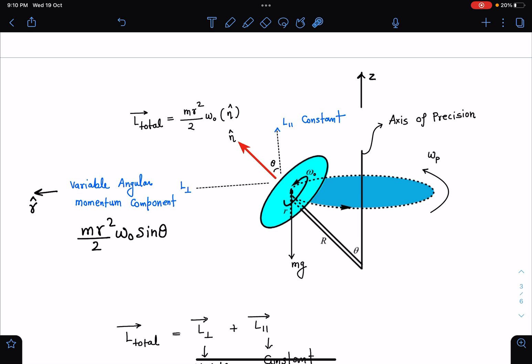About this point, this angular momentum will have two components. One is parallel to this precession axis, which is L parallel, which is constant. There is another angular momentum component which is changing its direction as the disc rotates. This component will be changing its direction, and I'm calling this direction r cap. This will be the cos theta component and this will be the sin theta component. So I can write it as m*r^2/2 * omega_naught * sin(theta) in terms of r cap.